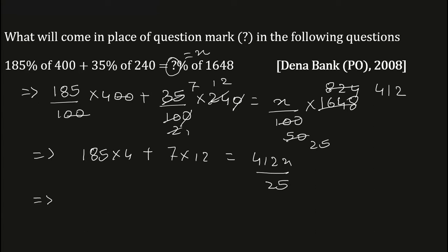On the left side, 185 × 4 = 740 plus 7 × 12 = 84, which equals 412x/25. Now 740 + 84 gives you 824 = 412x/25.